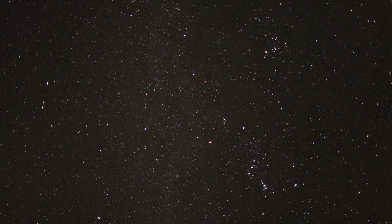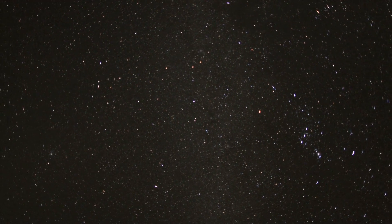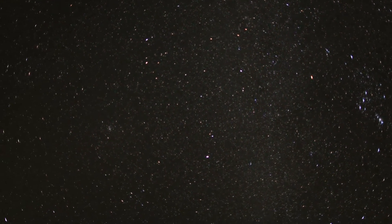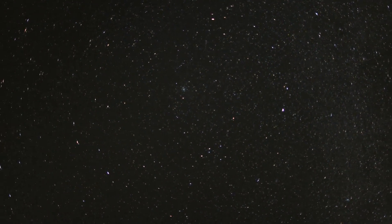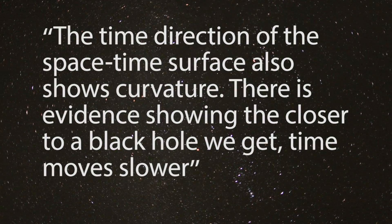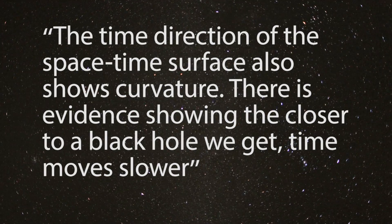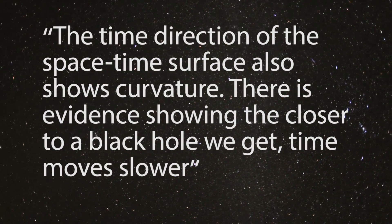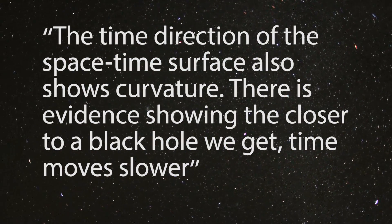So from another point of view, in a flat and uncurved space-time, planets and stars would move in straight lines rather than curved lines. In Tippett's words, the time direction of the space-time surface also shows curvature. There is evidence showing the closer to a black hole we get, time moves slower.